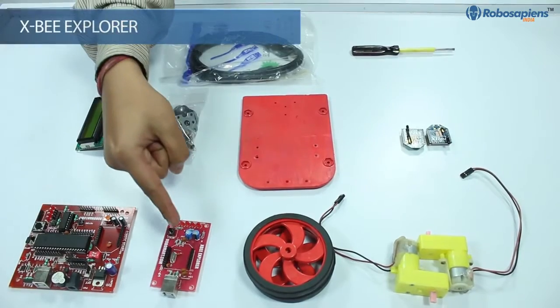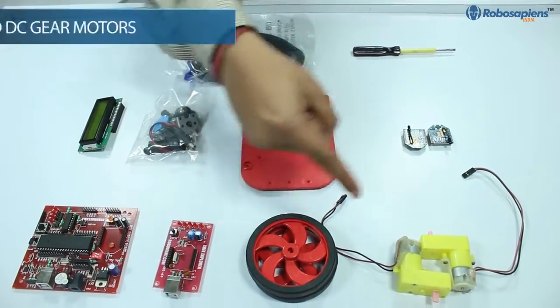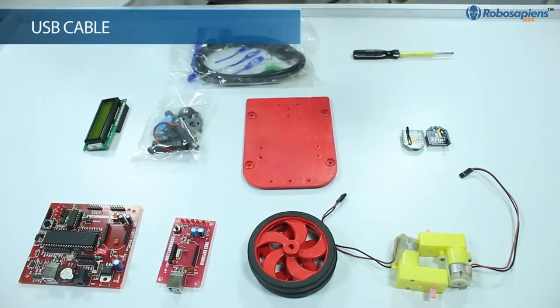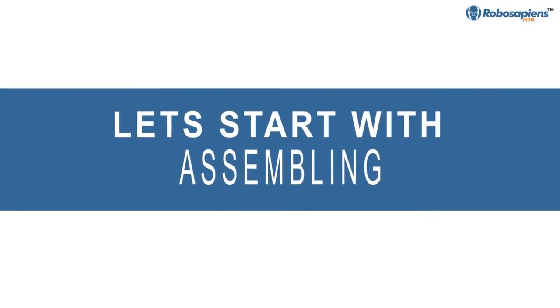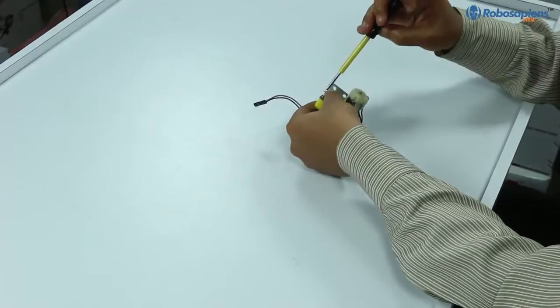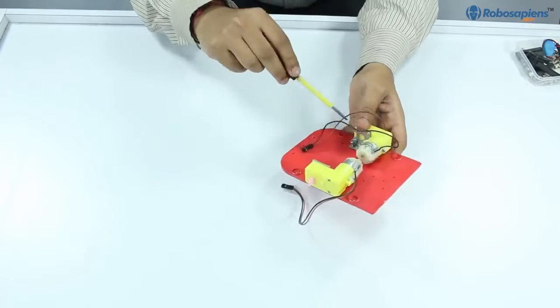Zigbee Explorer, wheels, motors, Zigbee wireless module, screwdriver, and a USB cable. Now let's start with the assembling process. Open the nut-bolt packet, connect the L clamps with motors, and then attach them on our chassis board.